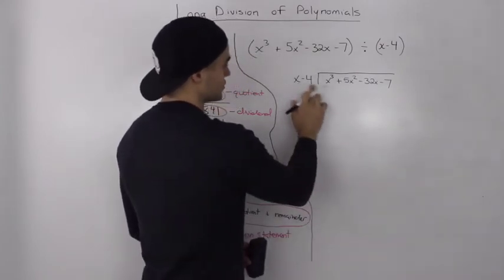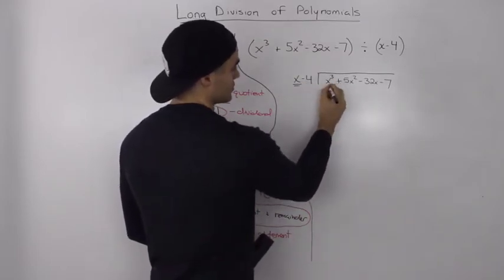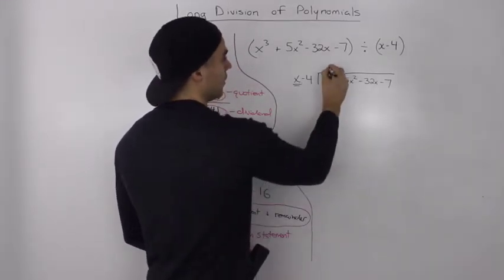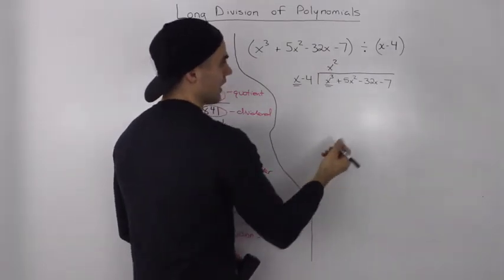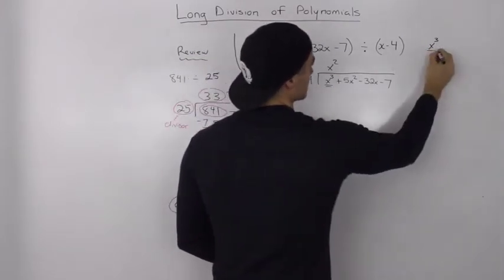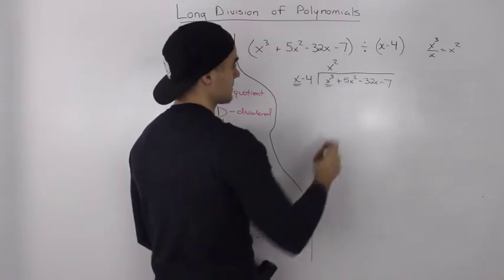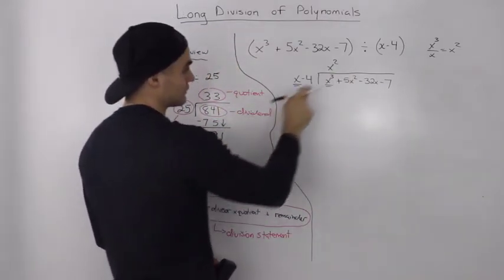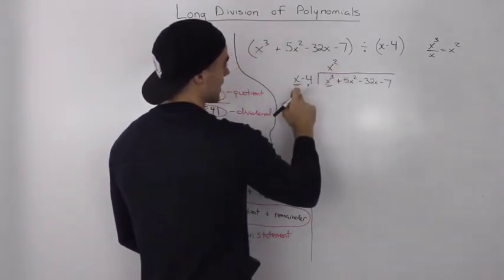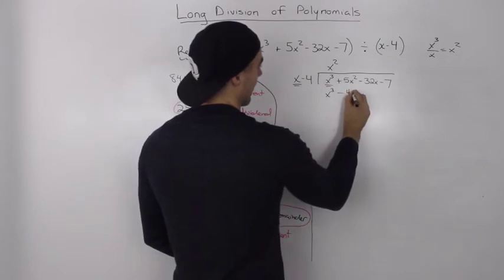When dividing, you want to see how many times the first part of the divisor goes into the first part of the dividend. So how many times does x go into x cubed? It goes in x squared times — you can verify on the side: x cubed divided by x gives x squared. Then, as we did with integers, we take x squared and multiply it by x minus 4: x squared times x is x cubed, and x squared times negative 4 is negative 4x squared.